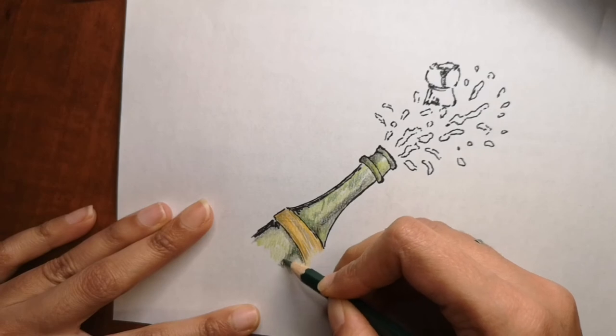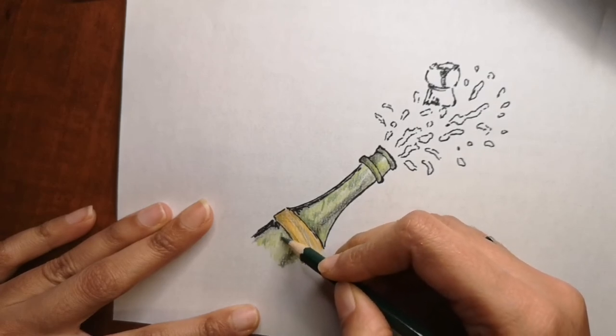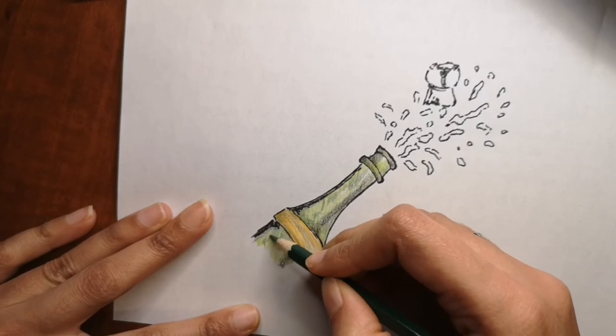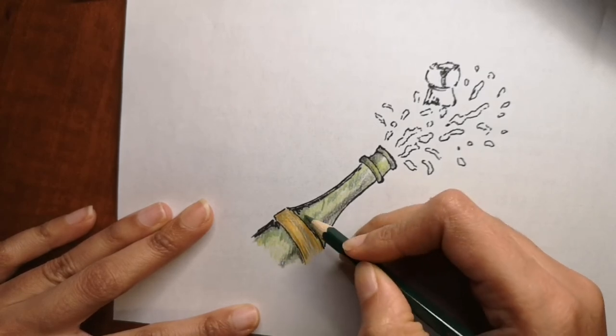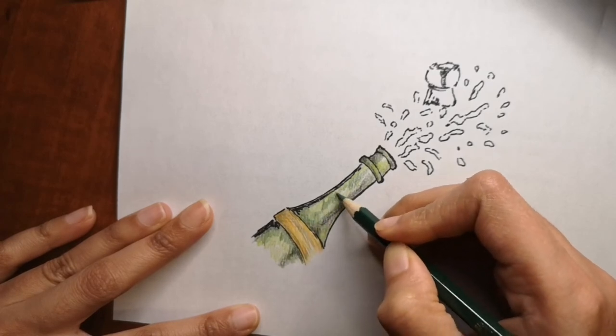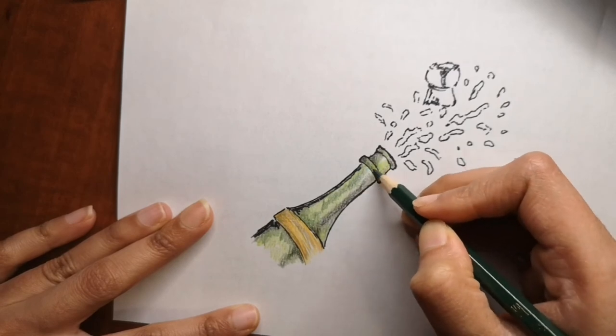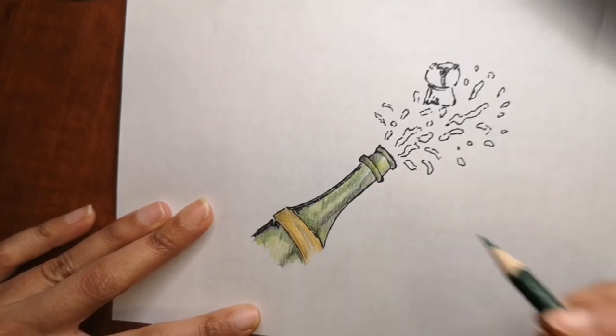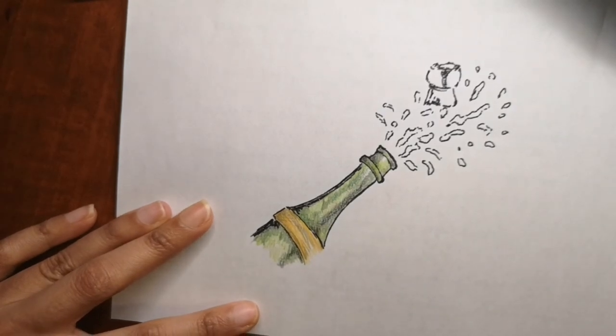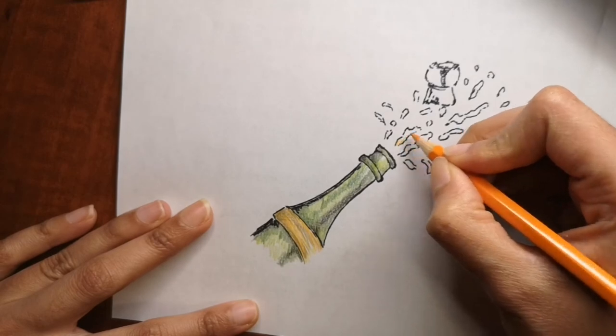I decided to draw a champagne bottle because it's the 31st night, because most of the people - well used to at least, not this year - but usually goes out and drink champagne and celebrate and watch that clock turn 12 for the next year to begin. So while that happens, everyone drinks champagne, so I decided to draw one for you.